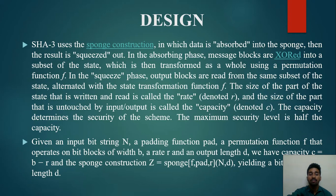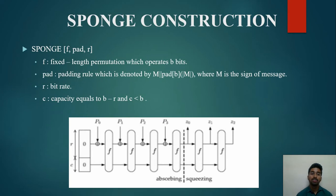Given an input string N, a padding function Pad, a permutation function F operating on bit blocks of width B, a rate R, and an output length D, we have capacity C equal to B minus R. The sponge construction Z equals sponge(F, Pad, R, N, D), yielding a bit string Z of length D. The sponge has three parameters: F is a fixed-length permutation operating on B bits; Pad is the padding rule denoted as Pad(B, M) where M is the message; and R is the bit rate, with capacity C equal to B minus R. In the diagram, P0, P1, P2, P3 are the inputs, Z0, Z1, Z2 are the hashed outputs, and the unused capacity C should be twice the desired resistance to collision or pre-image attacks.